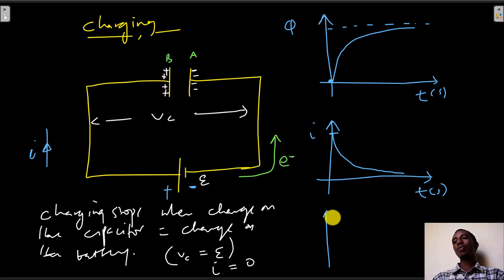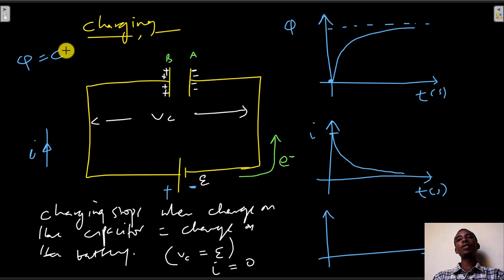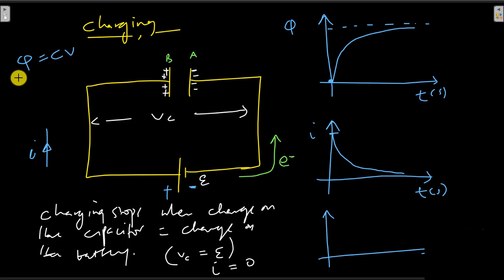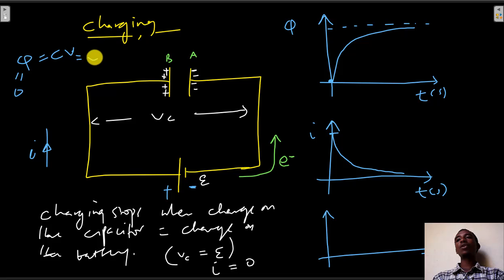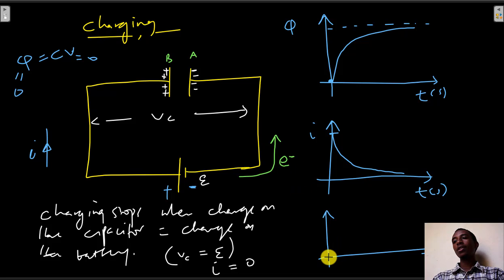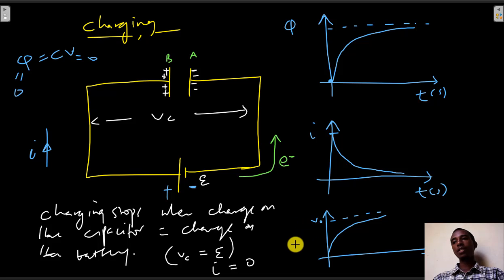What happens to the PD on the capacitor plates? Initially there is no charge, and since Q = CV, the PD is also zero. As charges accumulate on the capacitor plates, the PD increases. So the graph is also an exponential process, and this PD increases until it approaches the EMF of the source. That is what happens during charging of the capacitor.